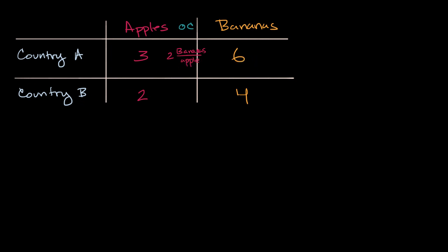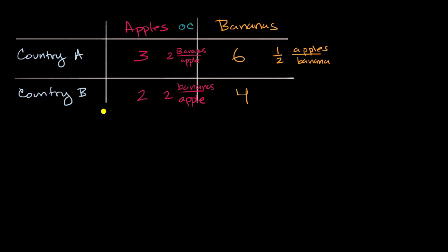Their opportunity cost for bananas is just the reciprocal of that — one half apples per banana. For country B, we can do a similar calculation. Country B's opportunity cost of apples: if they produce two apples, that means they're giving up four bananas, or two bananas per apple. And the opportunity cost of a banana — to produce four bananas they're giving up two apples — so that's one half of an apple per banana.